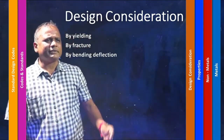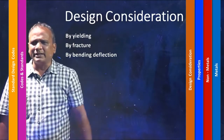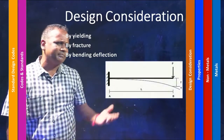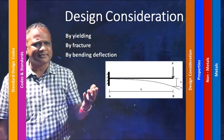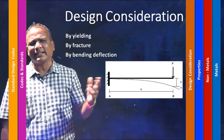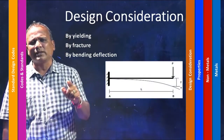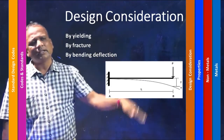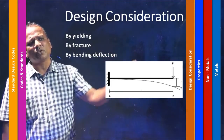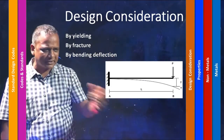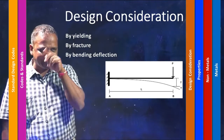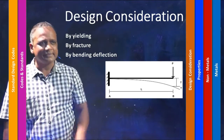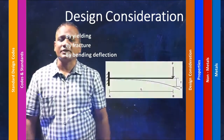The third design consideration would be bending deflection. Consider a cantilever beam with one end fixed — when a load and moment are applied at the other end, the whole beam undergoes a deflection. That is bending deflection.